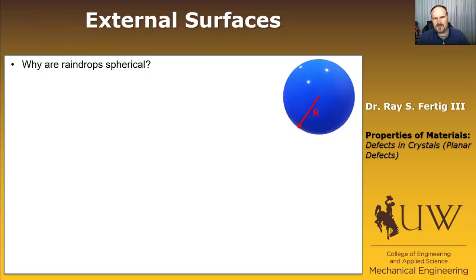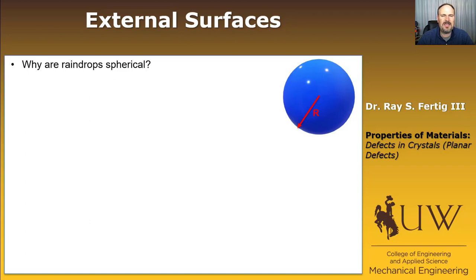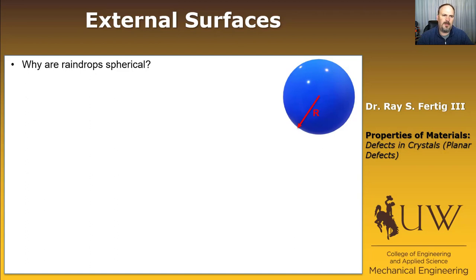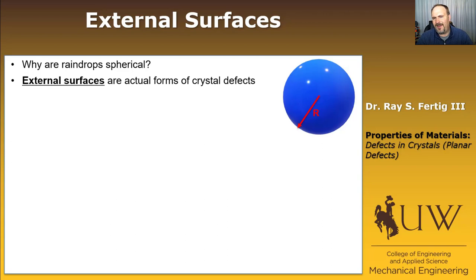Let's begin by talking about surfaces. I want to start with the question: why are raindrops spherical? Why does a droplet tend to form a sphere? In the case of crystals, any external surface is actually a form of crystal defect.